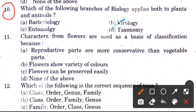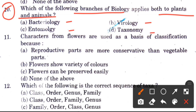Question 10: Which branch of biology applies both to plants and animals? Options are: petrology, biology, entomology, and taxonomy. The answer is taxonomy.